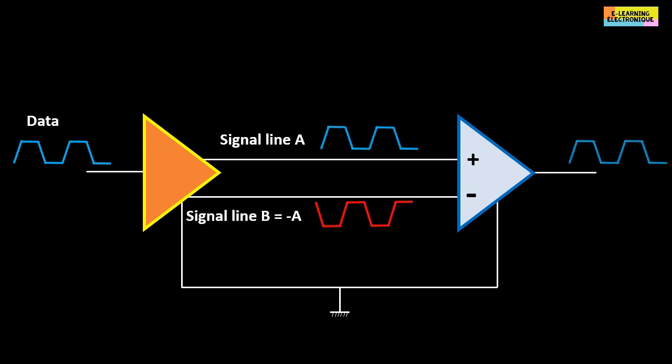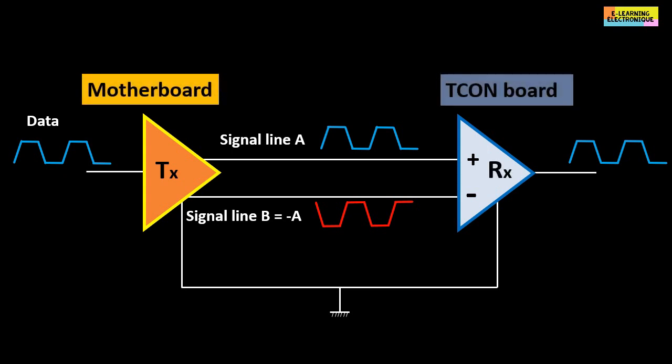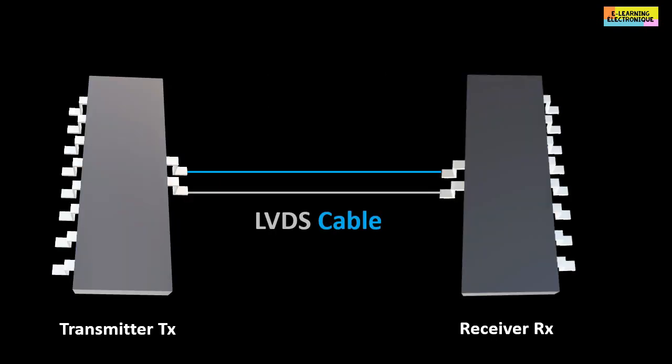In this system exists a transmitter noted TX, located on the motherboard and a receiver noted RX located at the level of the T-con board. Between these two devices are the LVDS cables. The transmitter and receiver are electronic devices of the integrated circuit type.